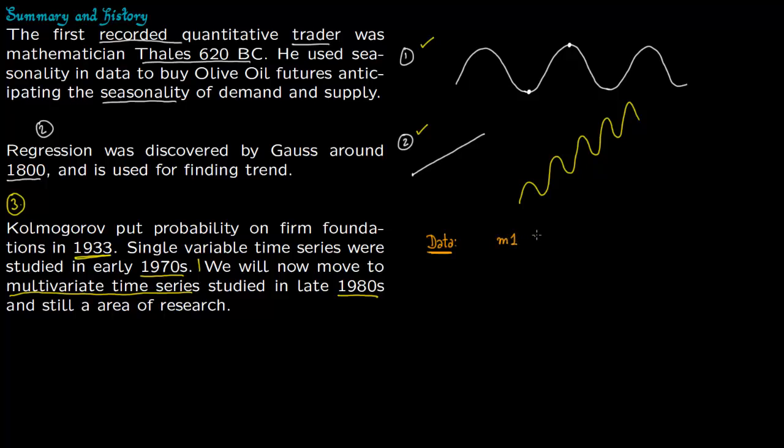You have some data. Now in this data there are three models hiding. The first model is seasonality, so you take seasonality out. Then the second model is trend. These two are deterministic models. Once you take seasonality out and trend out, the third model is just stochastics. Here you fit in time series. The stochastic part did not even come till 1933. These two were known to us, and seasonality was known since BC.